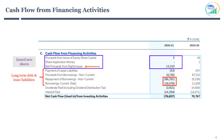The next line is dividend paid. When a company has extra cash, it pays dividends to shareholders, which reduces the company's cash. The last line is interest paid, referring to the financing cost — that is, interest paid on debt. Remember, finance cost was added back in operating cash flows. However, finance cost is shown as cash moving out of the company in cash flow from financing activities.